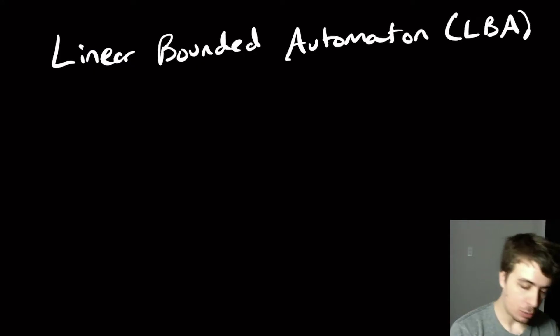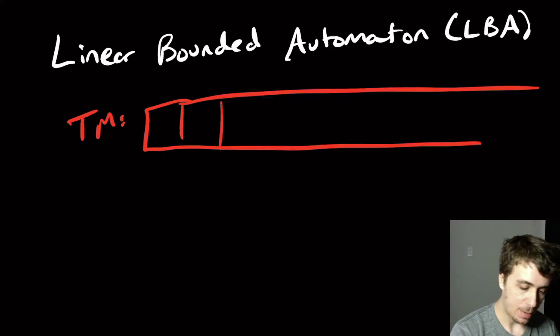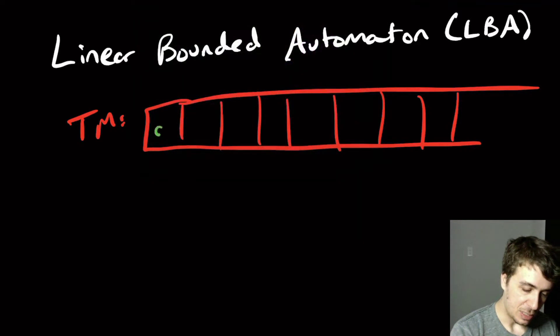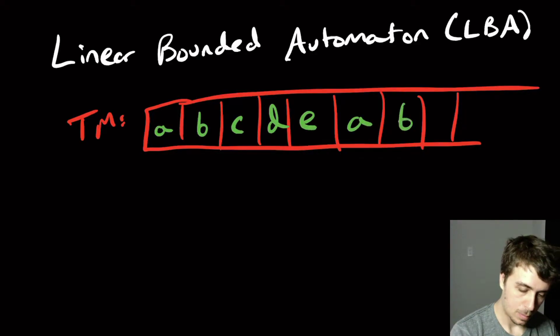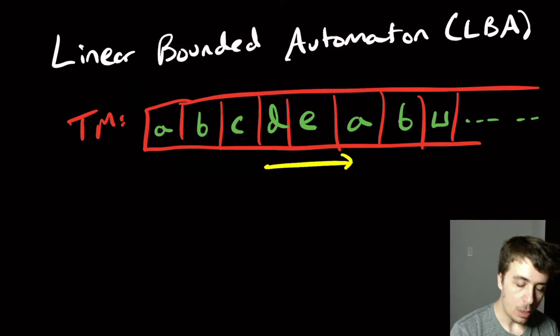With a Turing machine, what we're allowed to do is, let's say that this is our one-way infinite tape and we got some tape cells here. Let's say we have some tape characters and then some blanks and then it keeps going.